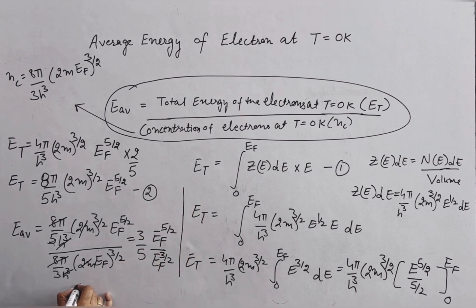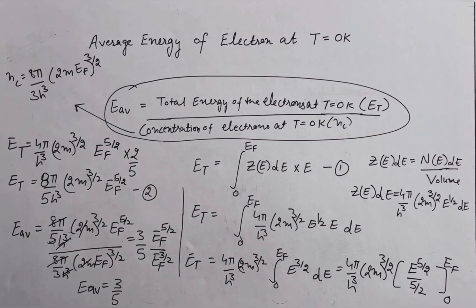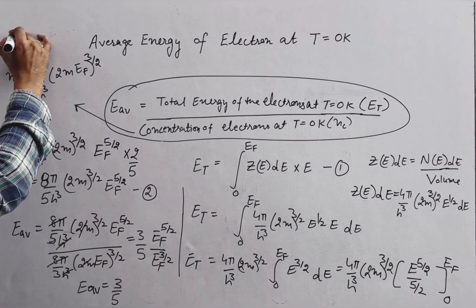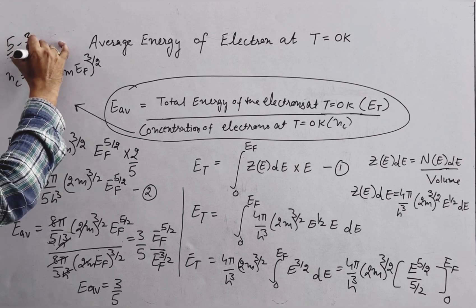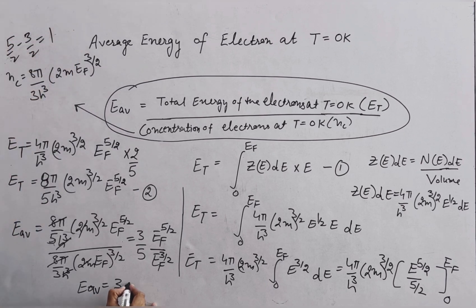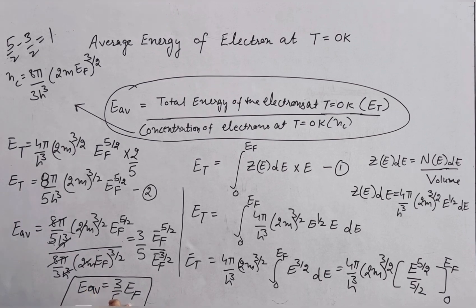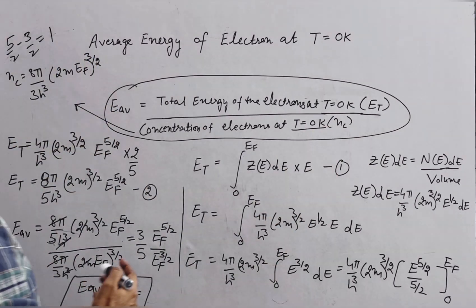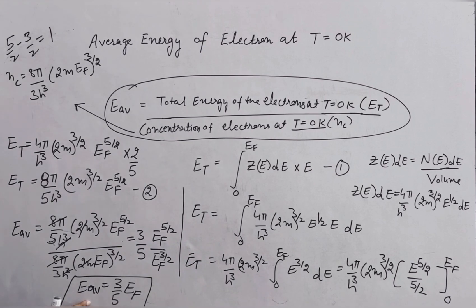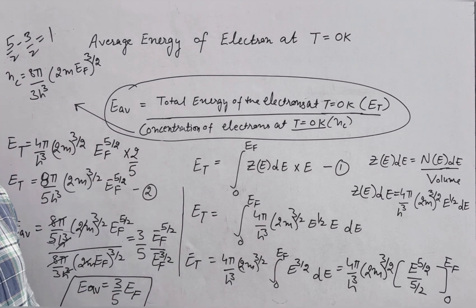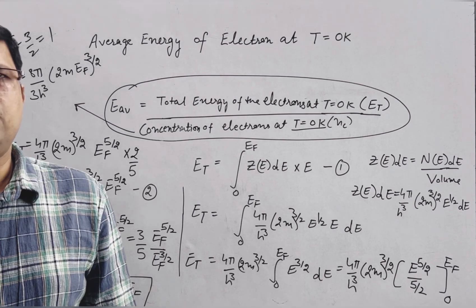Now we can write: E_average equals 3 by 5, and the power of EF is 5 by 2 minus 3 by 2, which equals 1. So E_average equals 3/5 EF — that is, 3 fifths the Fermi energy. So the average energy of the electron at T equal to 0 Kelvin is 3/5 the Fermi energy of the electrons. This was all about the average energy of the electron at T equal to 0 Kelvin. Thank you.